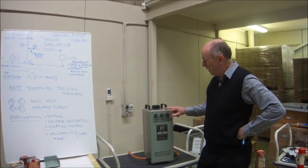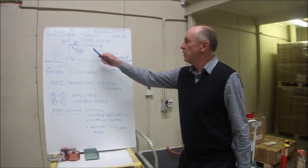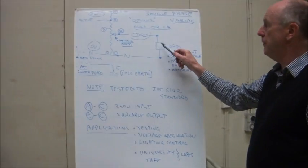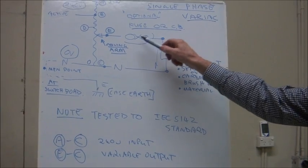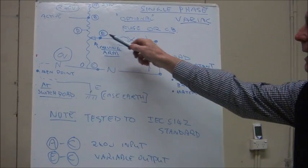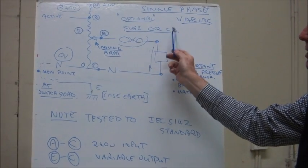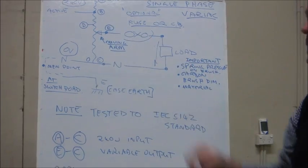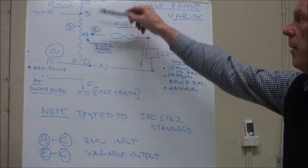This particular variac has fuse protection on the output side, which we show here. Which is very useful because if you have a short on the load side, the fuse will instantaneously blow and protect the windings. If you don't have this or a circuit breaker, you could potentially cause a lot of damage to the variac and mean that it will be unusable. So we strongly recommend fuse or circuit breaker protection on the moving arm.